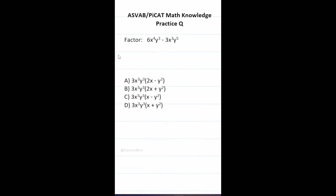This question asks us to factor 6x to the fourth y to the third minus 3x to the third y to the fifth. We can factor out a 3 from the coefficients. For the x terms, the highest power we can factor out is x to the third. For the y terms, the highest power we can factor out is y to the third. This gives us 3x cubed y cubed times (2x minus y squared), which is answer choice A.